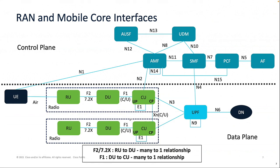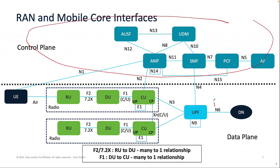This slide looks complicated — don't worry about it. This shows the packet core control plane and the packet core data plane, UPF. Remember I talked about decomposition. To Chris's question about GTP: GTP termination is done by the packet core.